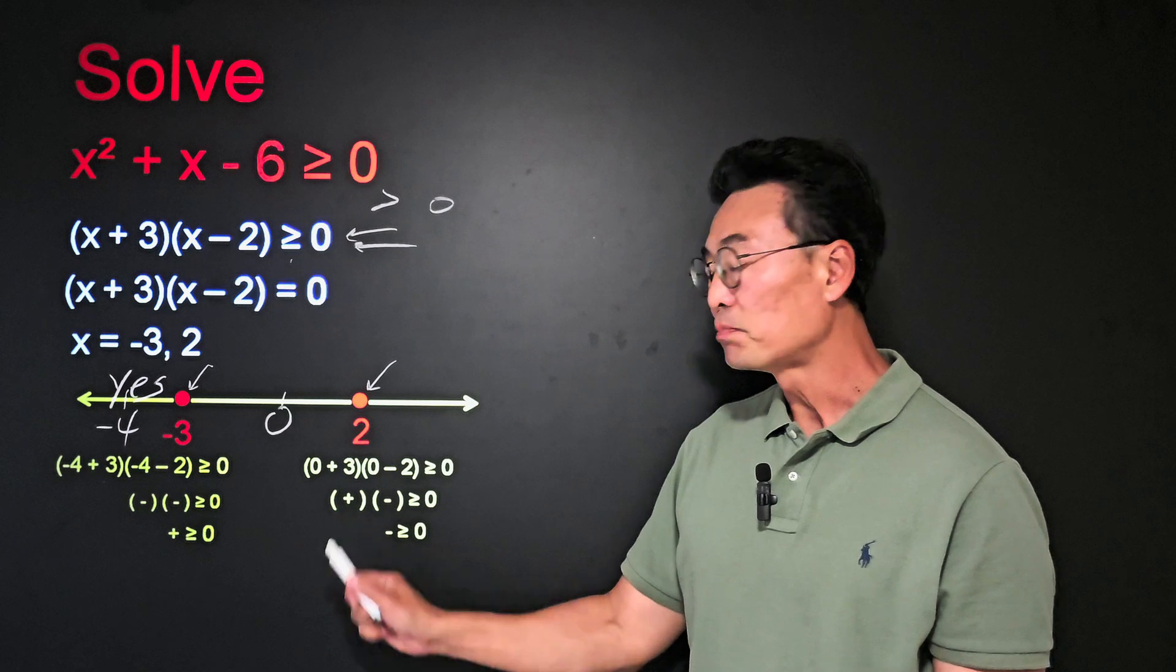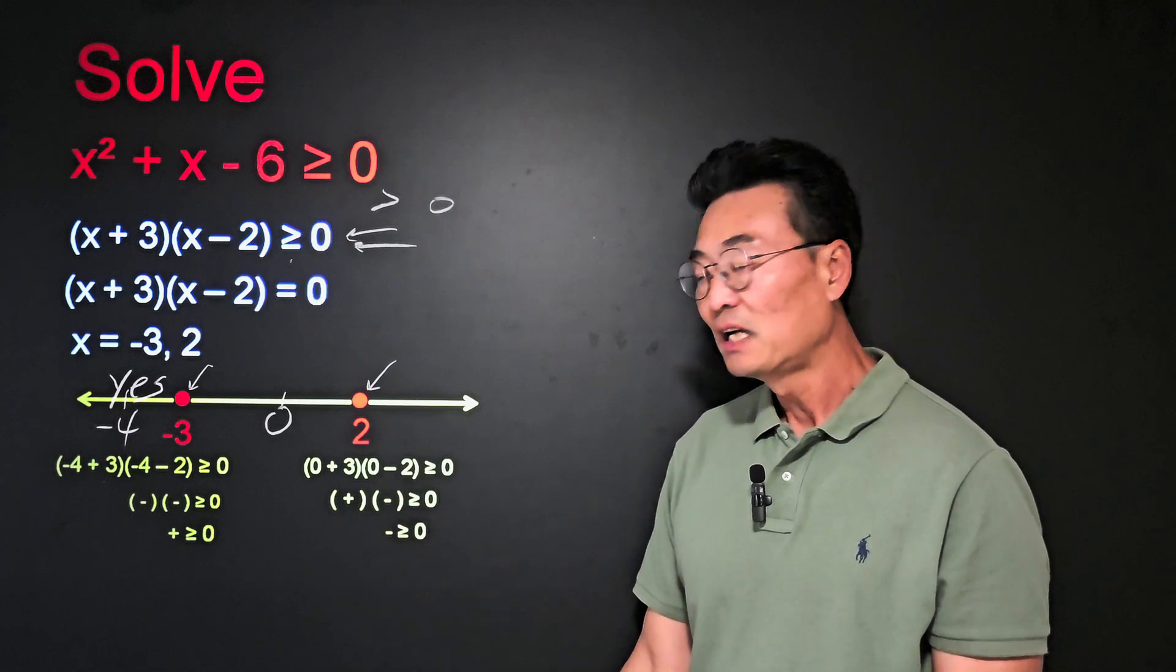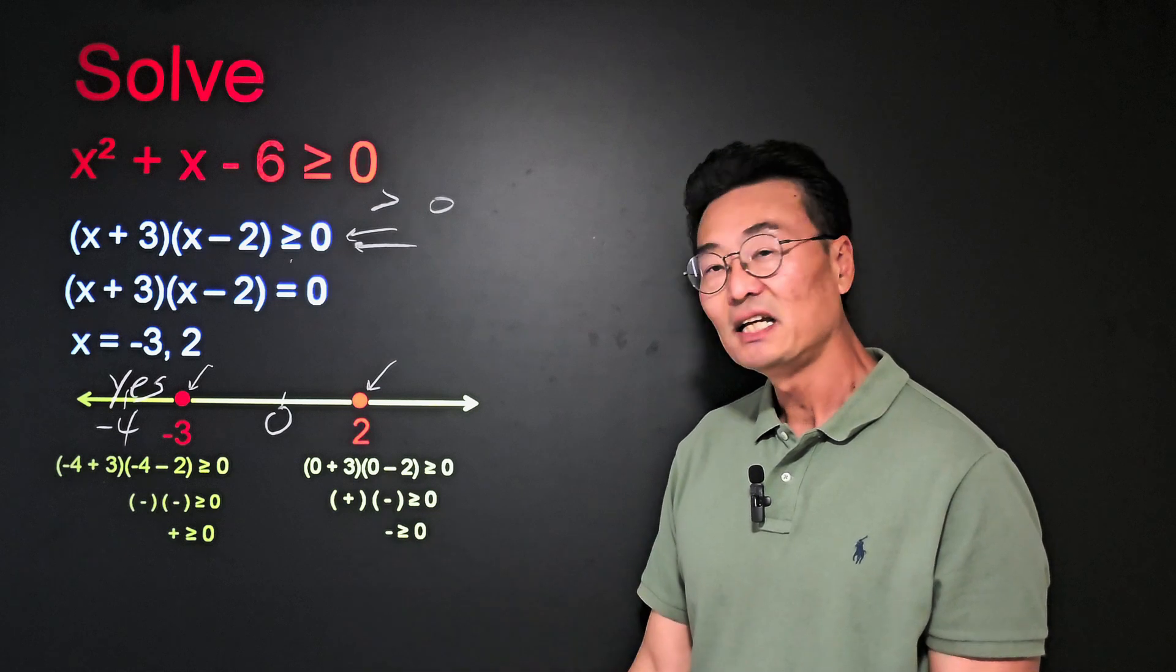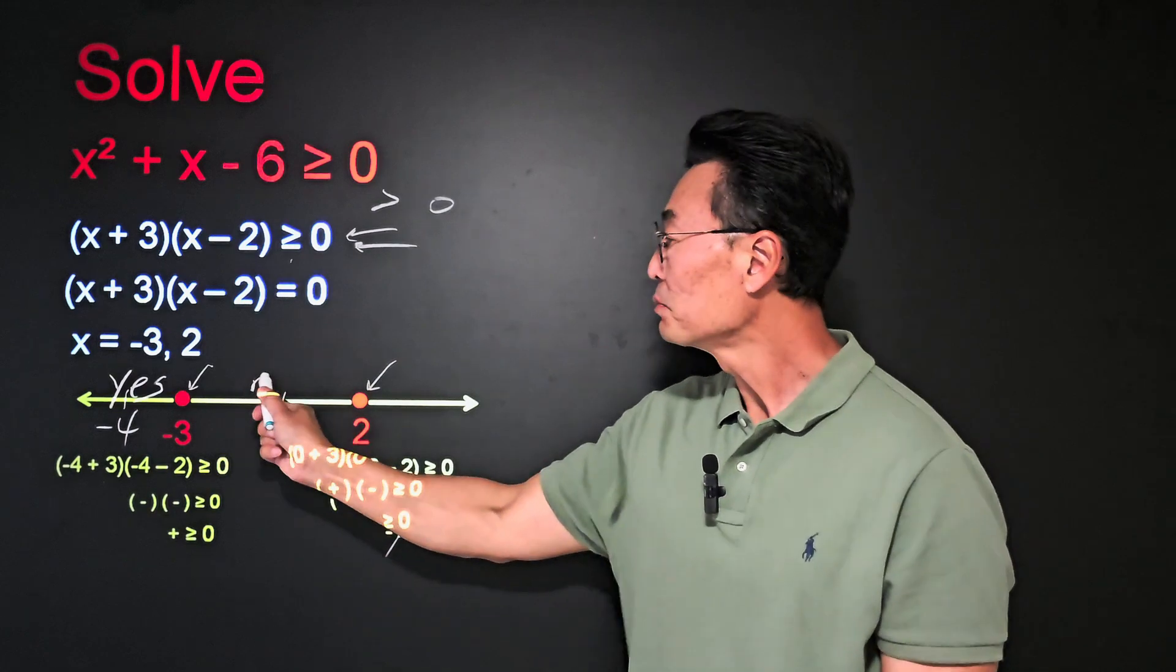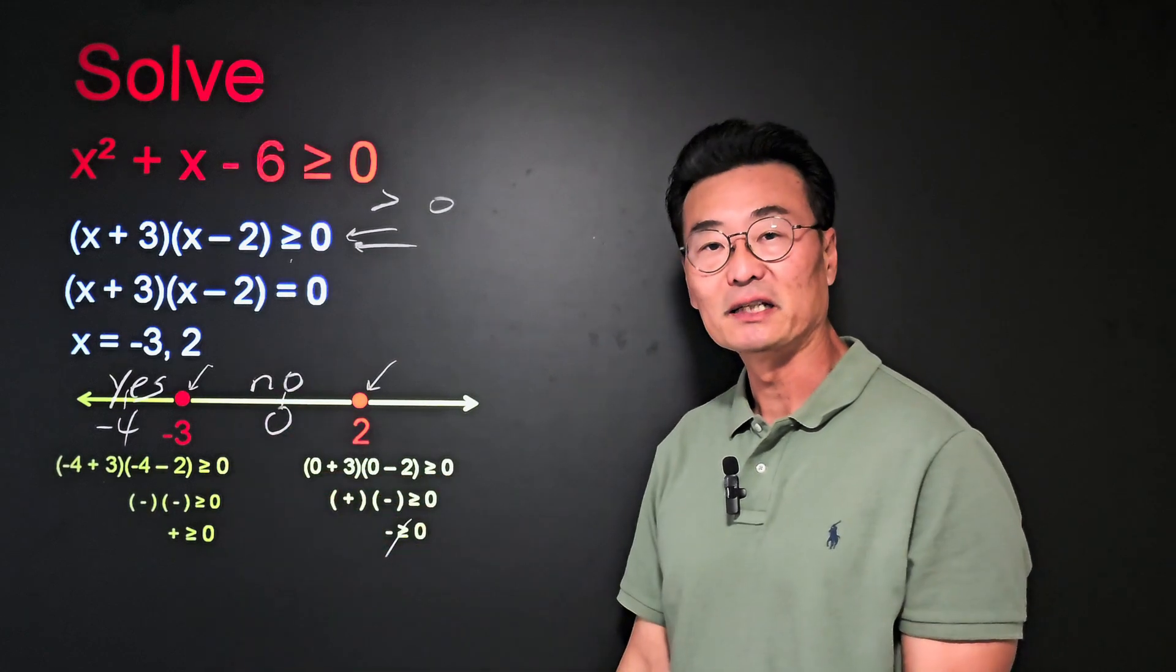0 plus 3 is positive. 0 minus 2 is negative. Positive times negative is negative, which is not true. So I'm going to put the word no between negative 3 and 2.